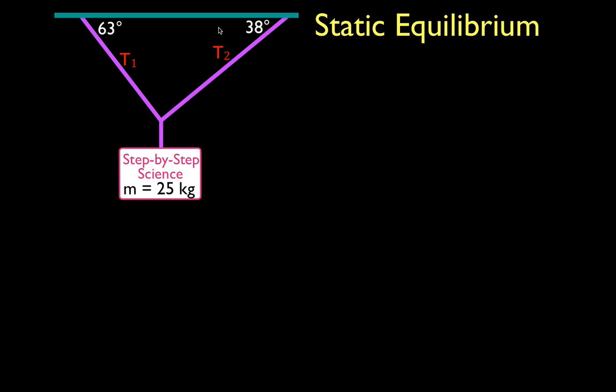This problem involves static equilibrium. Static because the sign is not moving, and equilibrium because the sum of all the torques, the sum of all the forces in the x-direction, and the sum of all the forces in the y-direction are equal to zero. In this problem, we don't have any turning forces, so there is no torque. But we are going to sum up the forces in the x-direction and set them equal to zero, and sum up the forces in the y-direction and set them equal to zero.